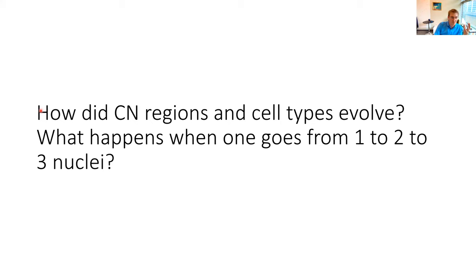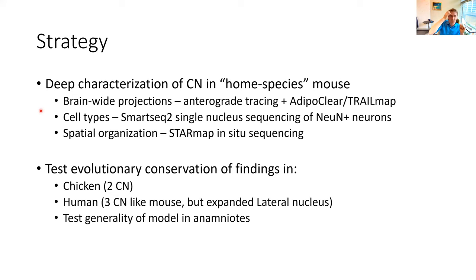Given this, the first question is: how do you go from one to two to three cerebellar nuclei? If you understand how you make a new nucleus and what cell types are in there, you might understand how cerebellar computation changes across different modalities or how it stays the same. To do this, we decided to do a thorough characterization of the cerebellar nuclei in mouse as our home species — looking at brain-wide projections using brain clearing, cell types, and their spatial localization. By comparing the different cerebellar nuclei of the mouse, we can come up with and test hypotheses about how they evolved.